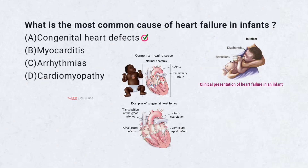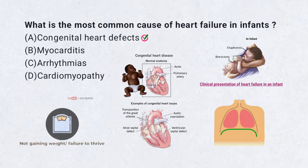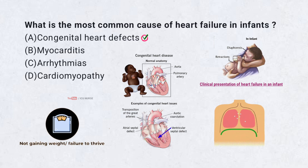Congenital heart defects like VSDs cause 80% of infant heart failure. Left to right shunts increase pulmonary blood flow. Symptoms include poor feeding, tachypnea, and failure to thrive. Medical management controls symptoms until surgical correction. Early detection improves outcomes.